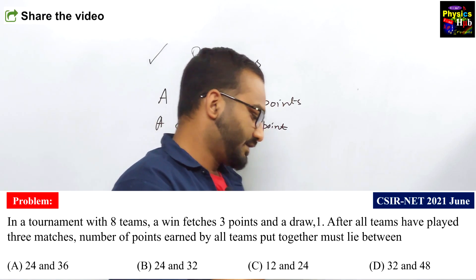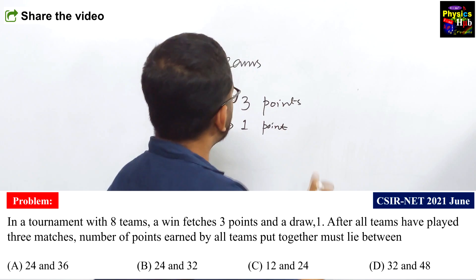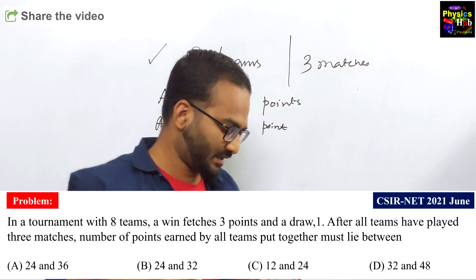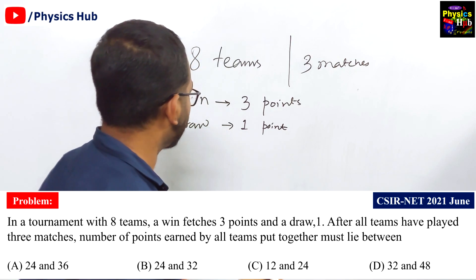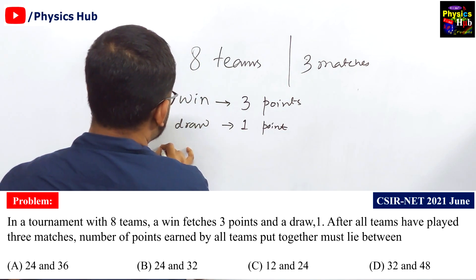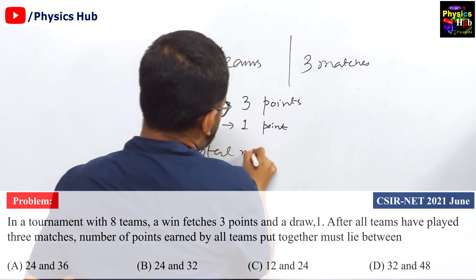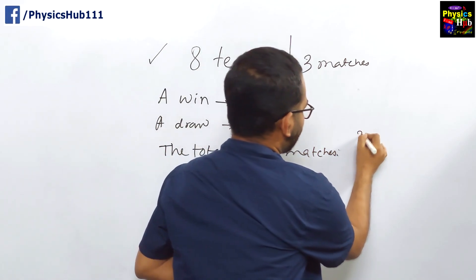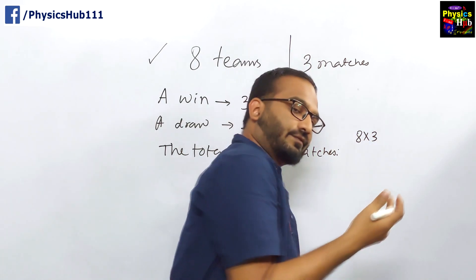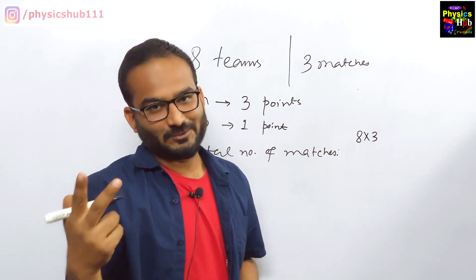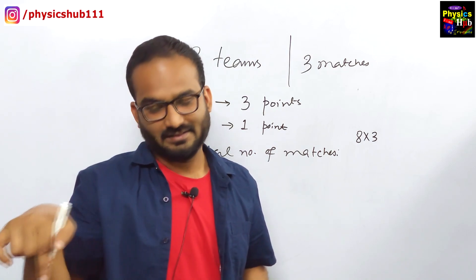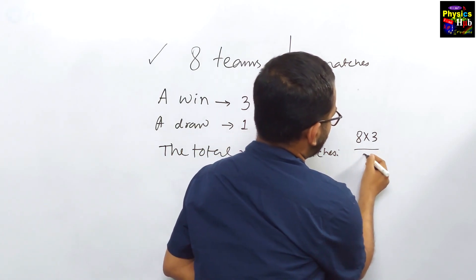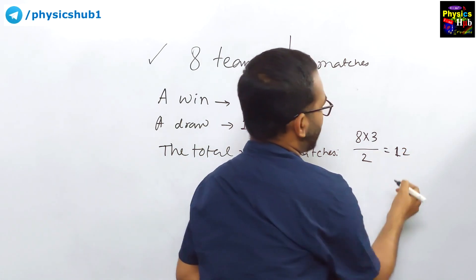Now, all teams have played 3 matches. So, can you tell me what will be the total number of matches? If all teams played 3 matches, therefore the total number of matches will be 8 × 3 ÷ 2. So, total number of matches will be 8 × 3 ÷ 2.